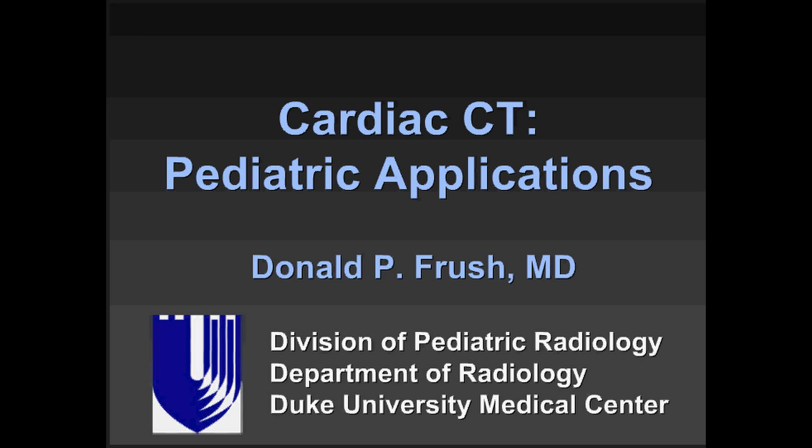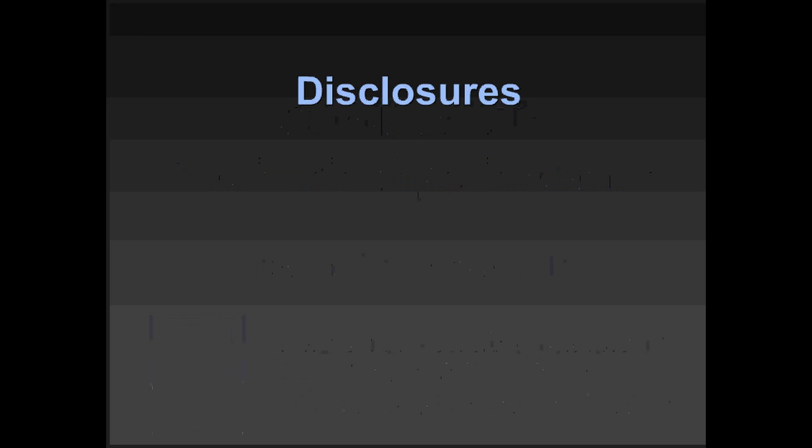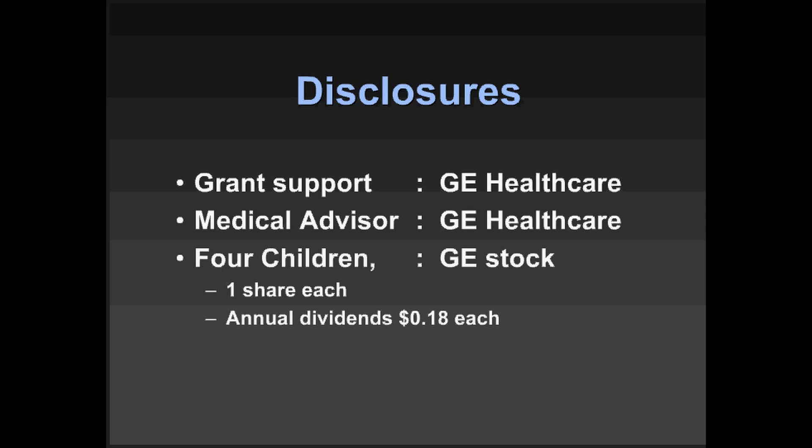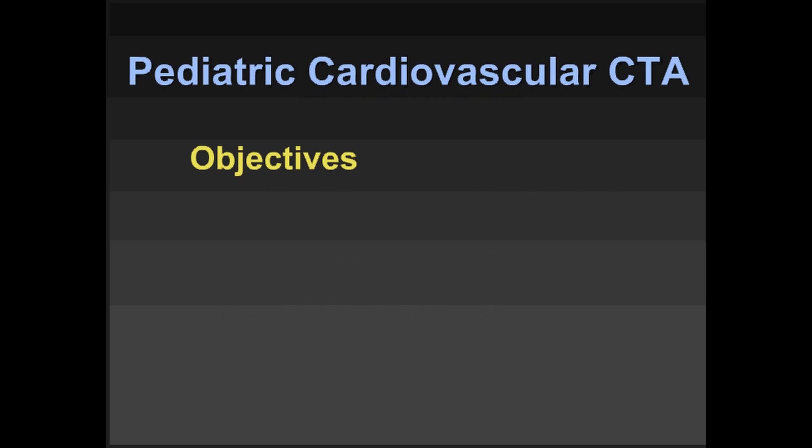I have a few disclosures to make. First, I have grant support from GE and I'm a medical advisor. I also have four children, each of whom has one share of GE stock, which yields dividends of about 18 cents apiece. We're hoping with the stock market that will be a quarter or so every six months.